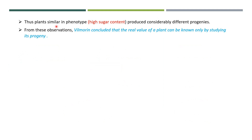So, what we have seen so far is that plants with similar phenotype — like high sugar content — can produce considerably different progenies. From this observation, Villimorin concluded that the real value of a plant can only be known by studying its progeny.